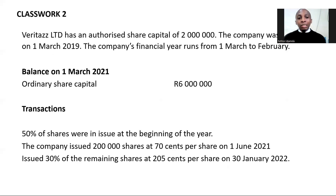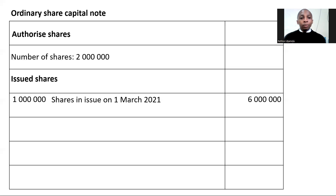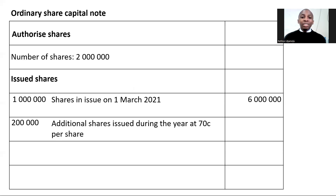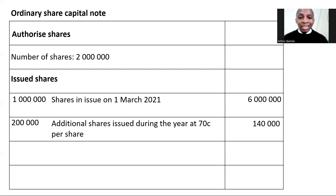The company issued 200,000 shares at 70 cents per share on the 1st of June 2021. That will definitely increase the number of shares that have been issued, so it will increase from one million to 1.2 million because we have issued an extra 200,000 shares. We issued these shares at 70 cents, so to figure out the actual amount you simply take 70 cents and divide by 100, because the amount is given in cents - we need to convert it into rand. So you take 200,000 multiplied by 70 cents divided by 100, and that gives you 140,000. Our share capital will increase from 6 million to 6 million 140 thousand.